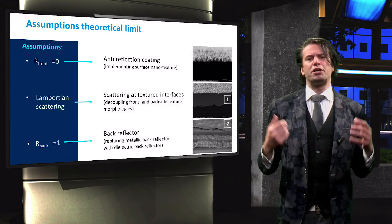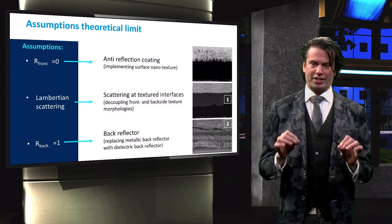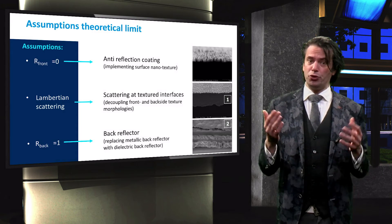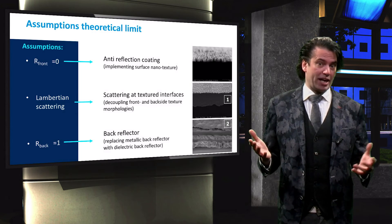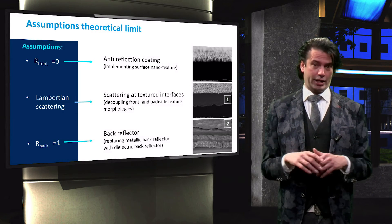Finally, for the Yablonovitch limit, we assume the back reflector to be an ideal reflector. This can be achieved through the use of a dielectric back reflector, which has lower parasitic absorption than a metallic back reflector.